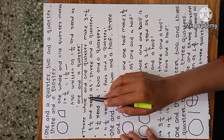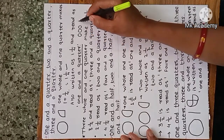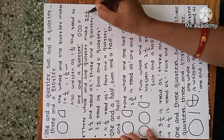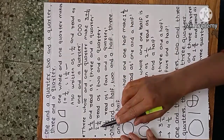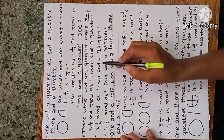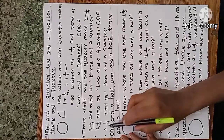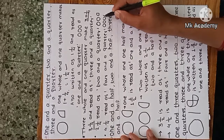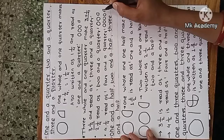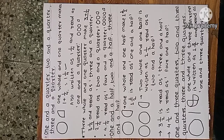In the same way, three whole and one quarter is three plus one-by-four, written as three and one-by-four, read as three and a quarter. Similarly, two and one-by-four is read as two and a quarter. Four and one-by-four is read as four and a quarter — that is four wholes and one quarter.